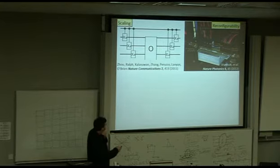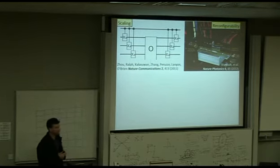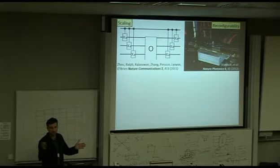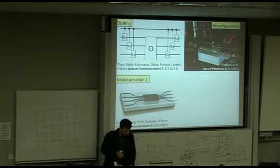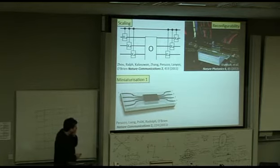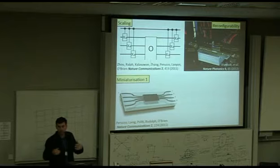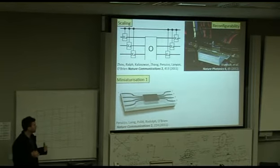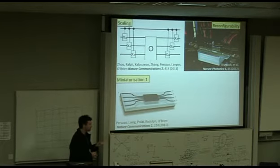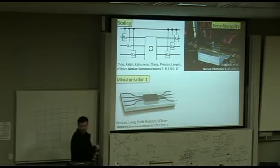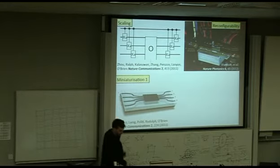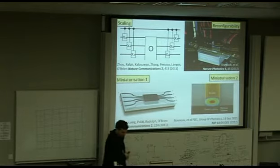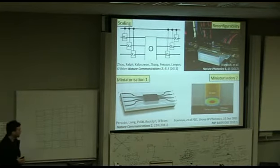In terms of reconfigurability, here's a device with eight of those phase shifters, you can see all the electrodes coming in. This circuit allows you to do pretty well anything you might like to do with two qubits. You can generate any pure two qubit state of any degree of entanglement, from unentangled to maximally entangled and everything in between. In terms of miniaturization, there's two approaches. Here we use multi-mode interference devices to realize an N-mode beam splitter. This is the generalized Hadamard operation with potential to dramatically simplify things.